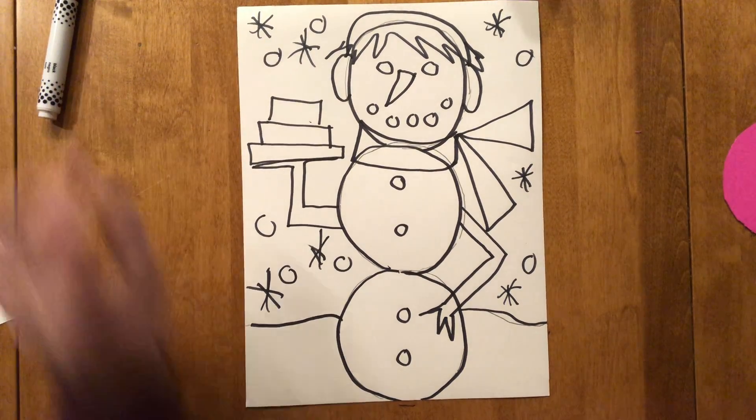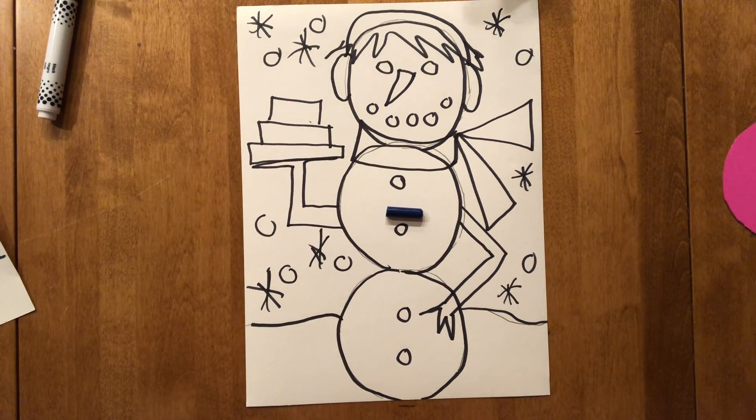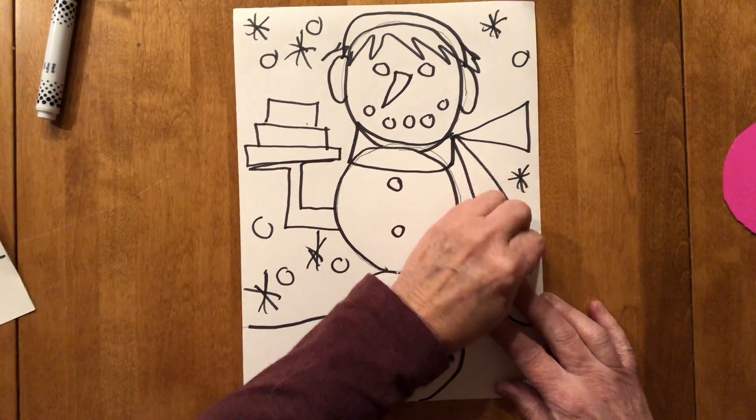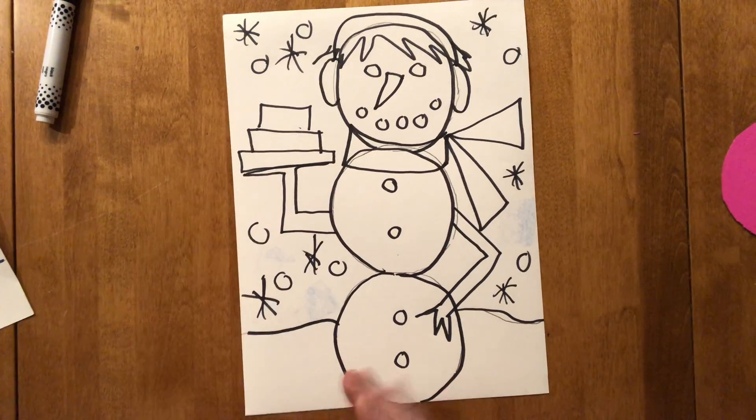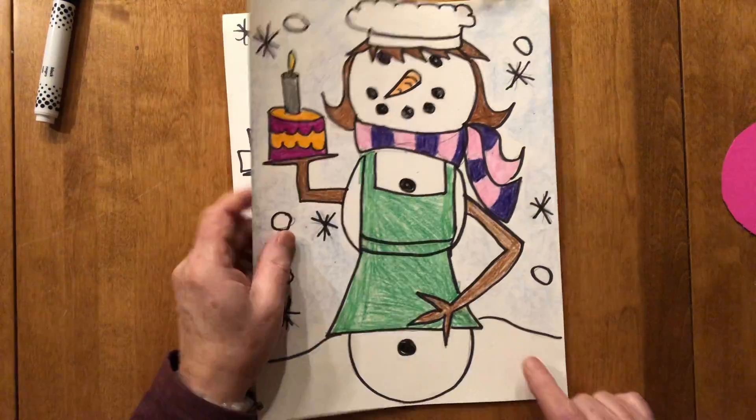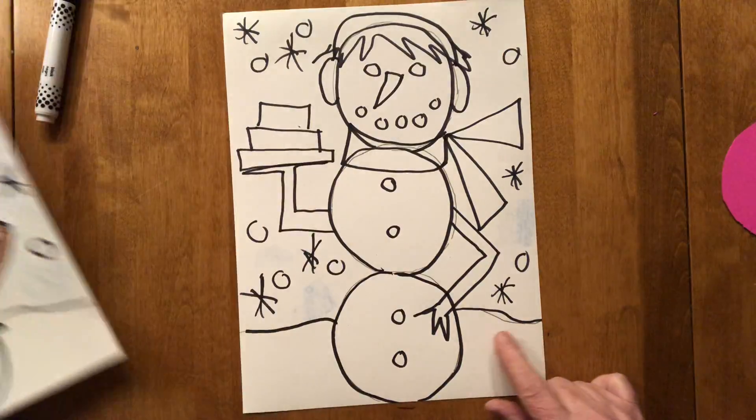Okay, when that's done, you're going to find the blue sideways crayon in your supply caddy and you're going to push on the side like this. Okay, all the way around. You're just going to do the sky. So you're not going to go on top of your snow person at all. Just the sky.